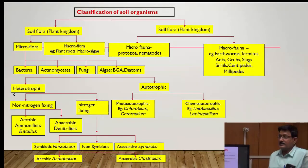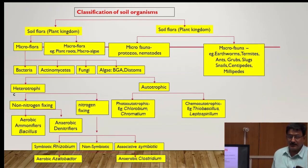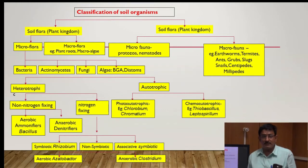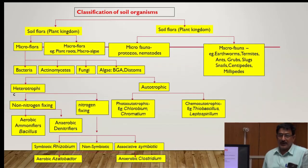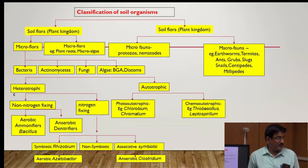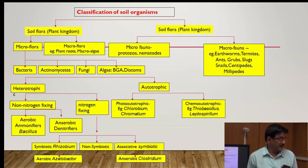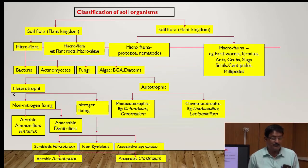The classification of soil microorganisms: soil microorganisms are divided into two groups — soil flora and soil fauna. Soil flora is present in the plant kingdom and soil fauna is present in the animal kingdom. Soil flora is divided into two groups: micro flora and macro flora.